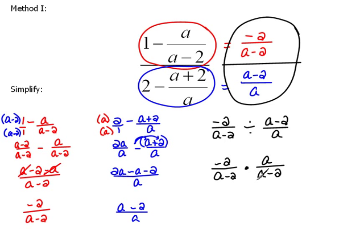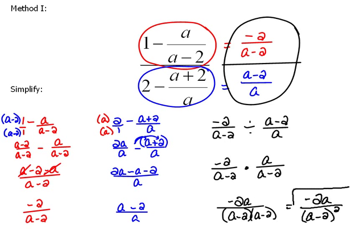And now we could do any canceling if there was any. In this case, we don't have any numerators that will cancel with any denominators. So we simply multiply straight across. So this would be negative two a over a minus two times a minus two. Or we could write this as negative two a over a minus two quantity squared. That would probably be the best way to write that answer.